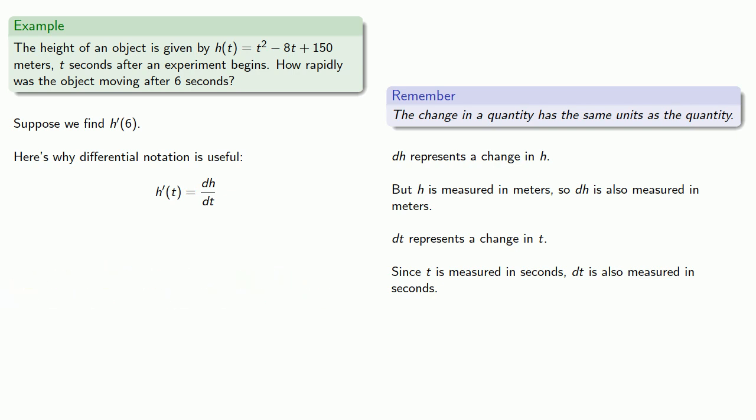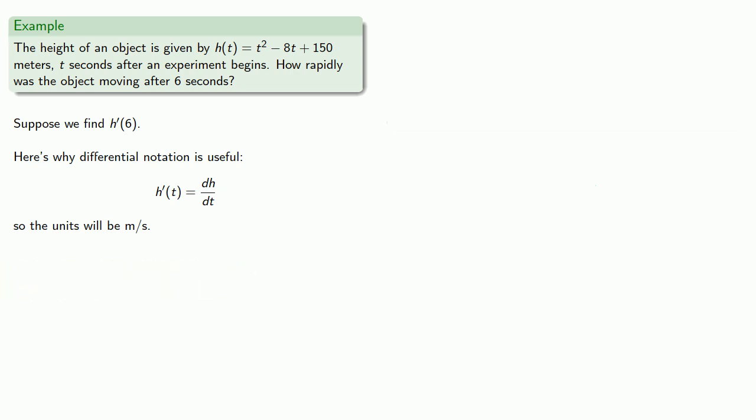And so while it might not be clear what the units of h'(t) are, the units of dh/dt will be meters over seconds. So let's say we find h'(6). We find it's equal to, numerically it's 4, and we know the units are meters per second. So h'(6) is 4 meters per second.